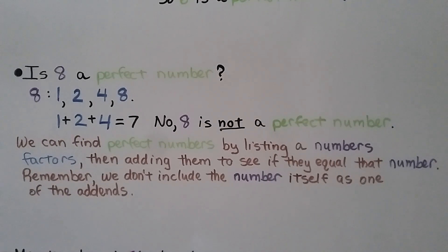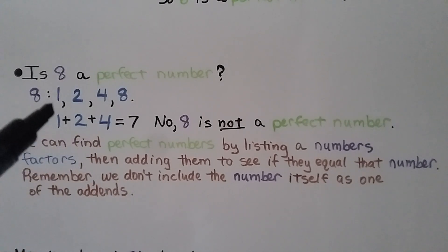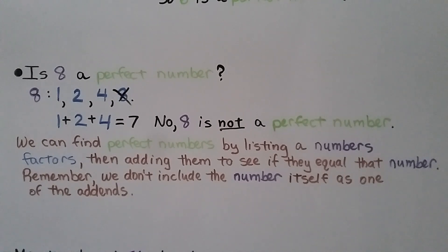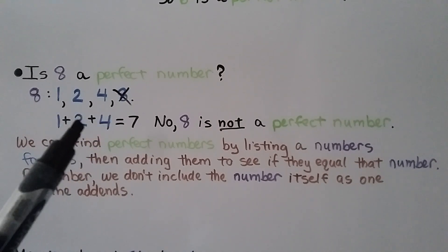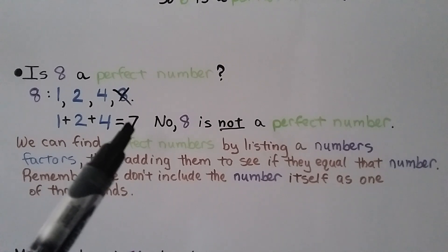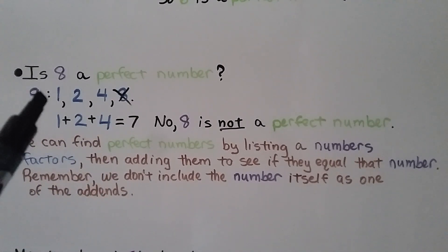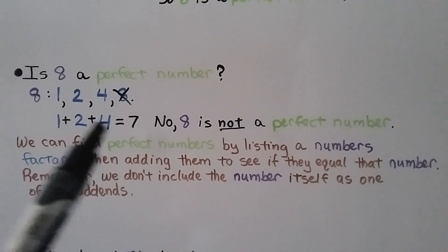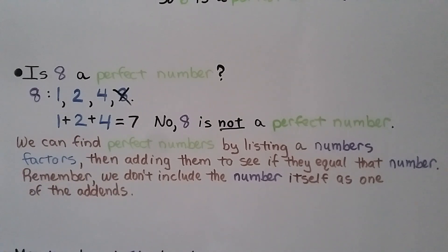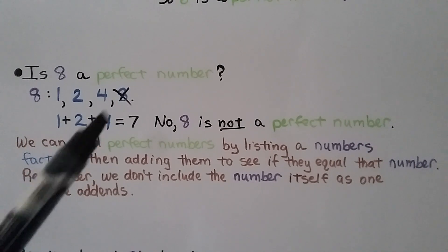Is 8 a perfect number? The factors of 8 are 1×8 and 2×4, giving 1, 2, 4, and 8. We exclude 8 itself as an addend, leaving 1+2+4=7. Since 7 does not equal 8, then 8 is not a perfect number. We find perfect numbers by listing a number's factors, adding them (excluding the number itself), and checking if the sum equals that number.